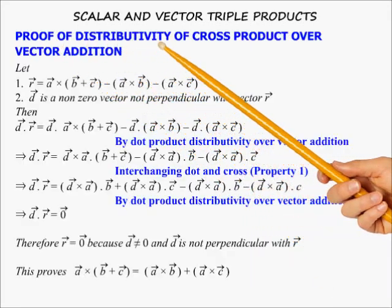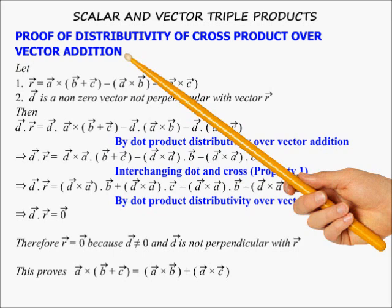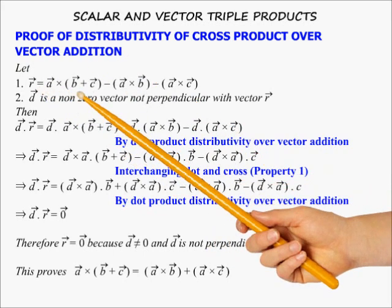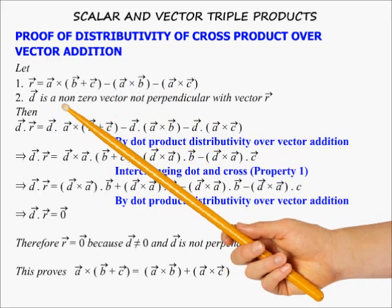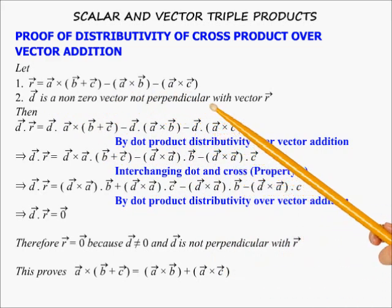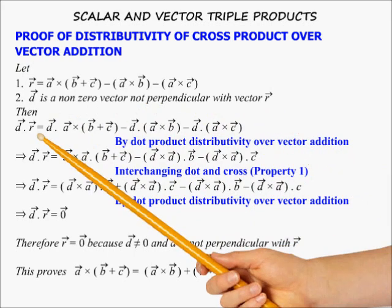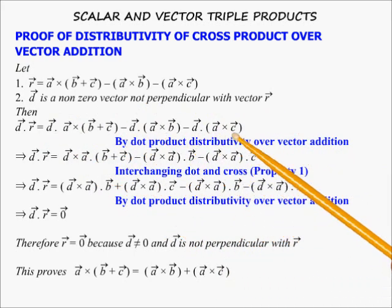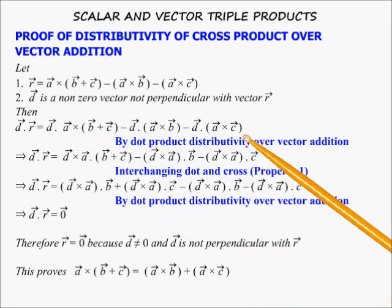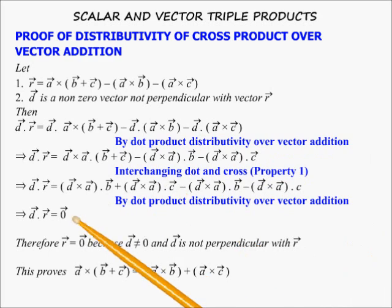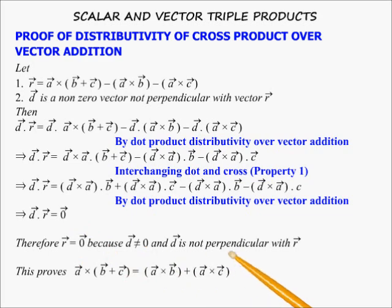Proof of distributivity of cross product over vector addition. Let r = a×(b+c) − a×b − a×c. Let d be a non-zero vector not perpendicular to r. Therefore d·r equals zero (by applying triple product properties and interchanging dot and cross operators). This implies r = 0, since d is non-zero and not perpendicular to r. In this manner we prove the distributivity of cross product over vector addition.